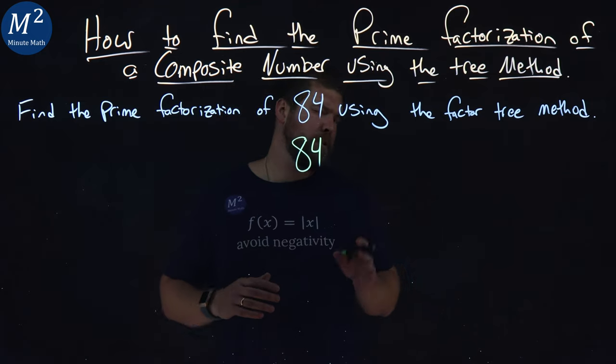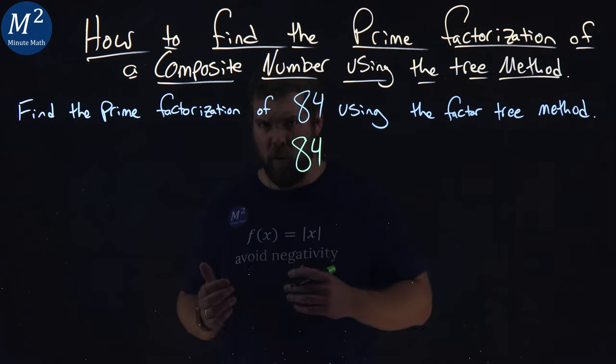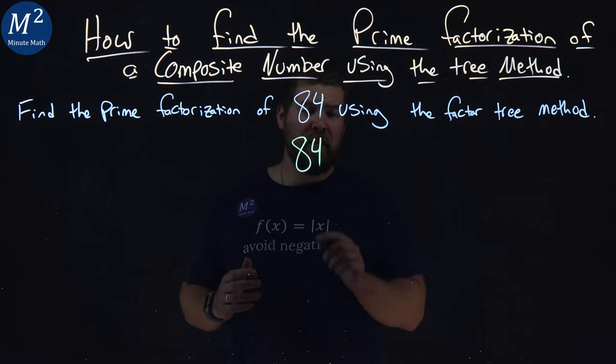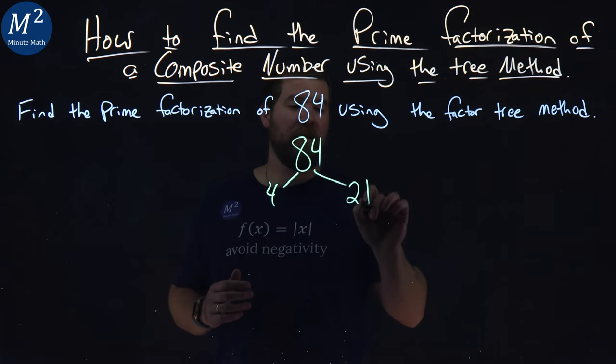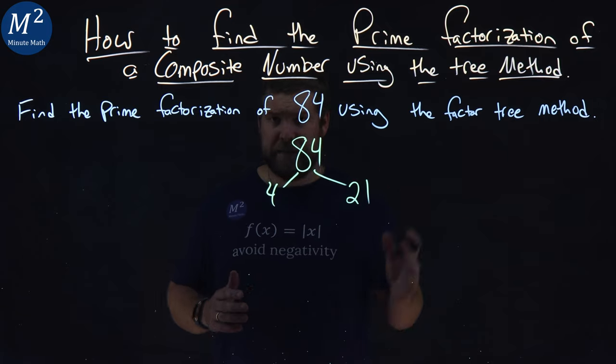Then I think about what two numbers multiply to be 84. Two numbers that multiply to be 84 are 4 and 21. 4 times 21 is 84.